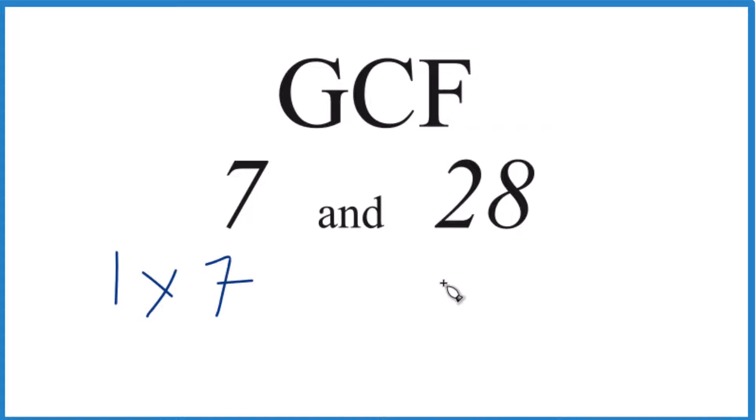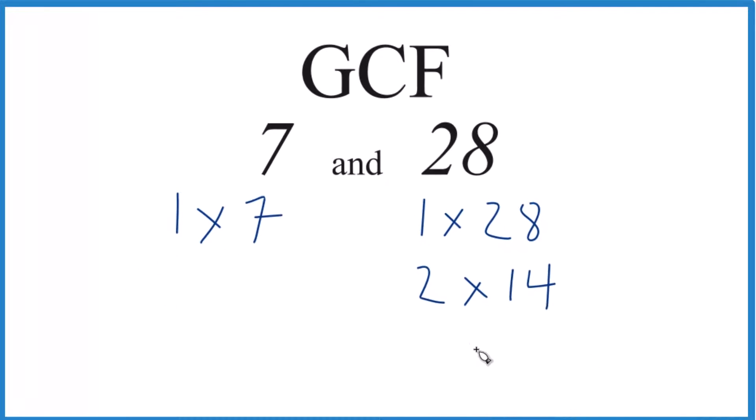For 28, we could have 1 times 28, that equals 28; 2 times 14 equals 28; and then 4 times 7. But that's it—these are the factors for 28.